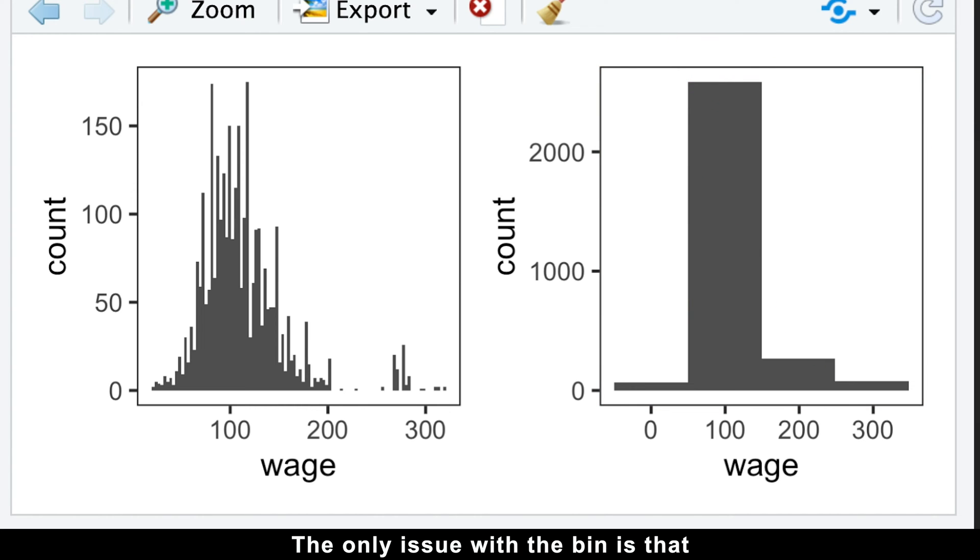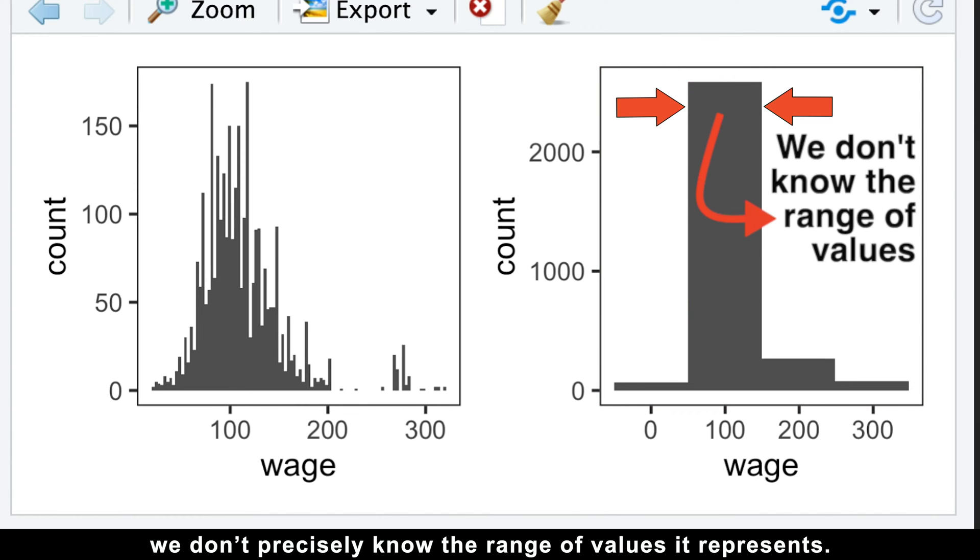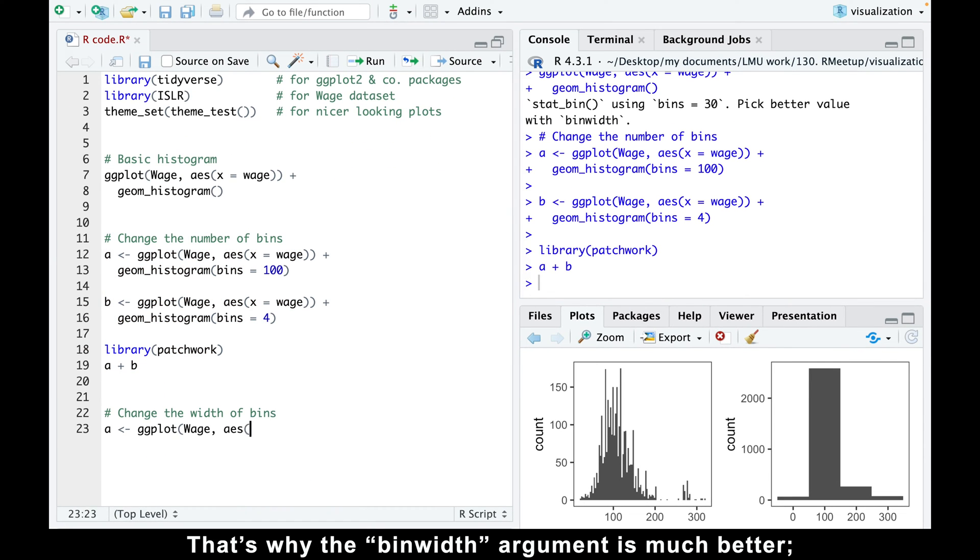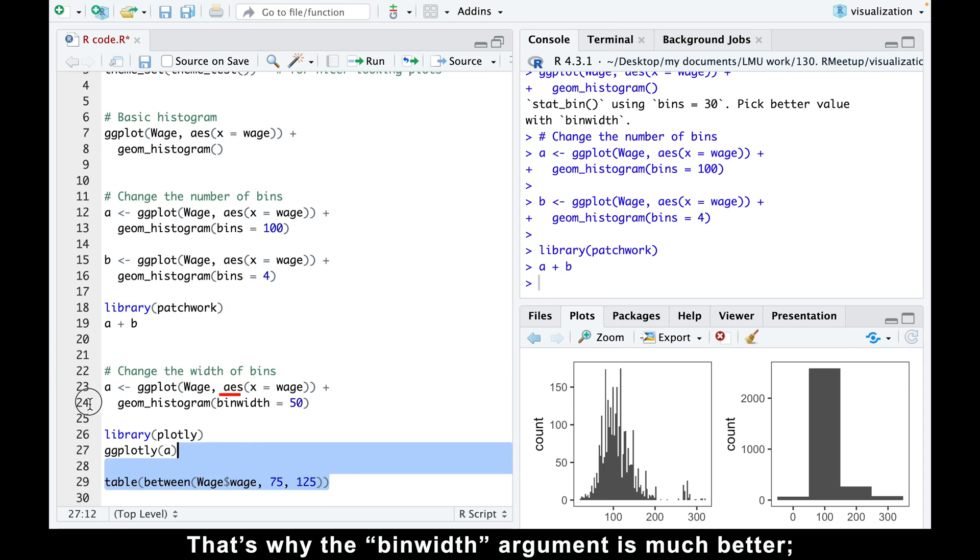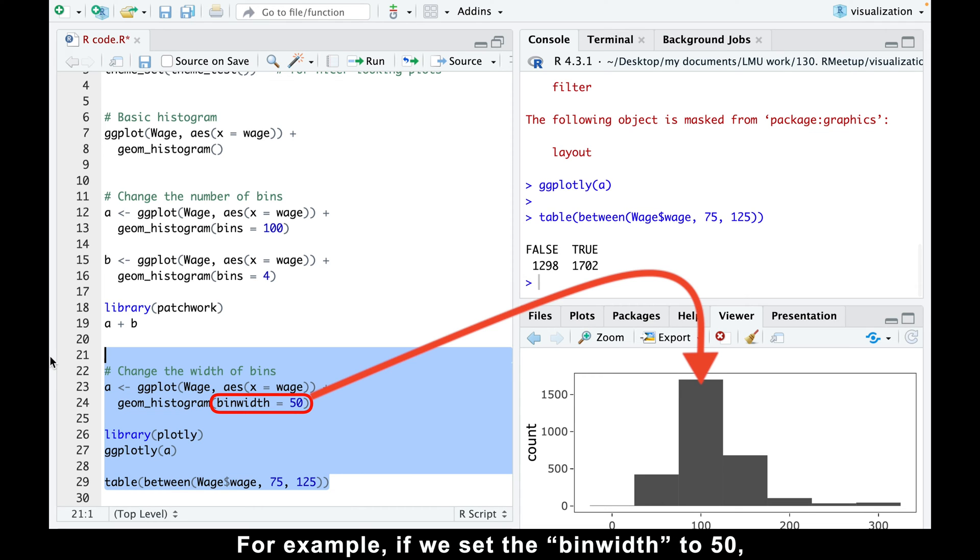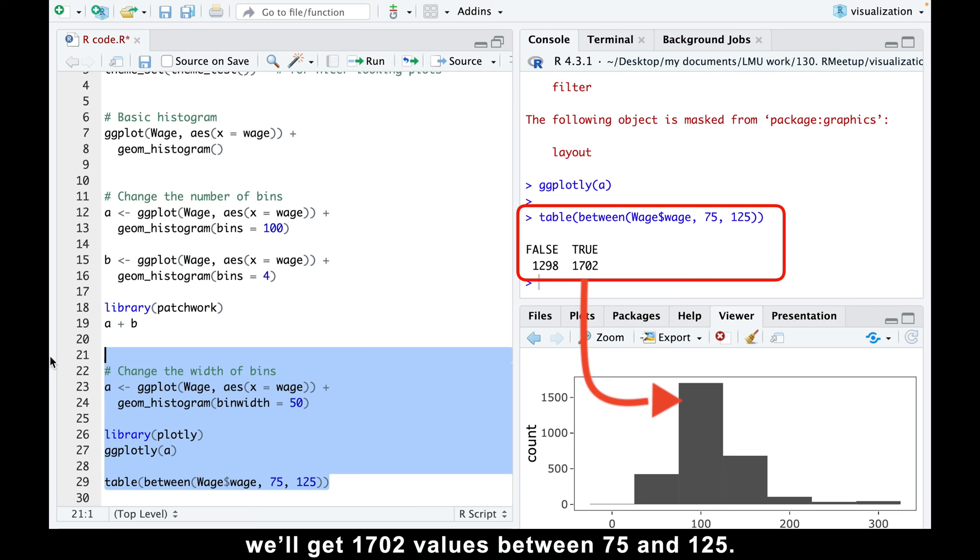The only issue with the bin is that we don't precisely know the range of values it represents. That's why the bin width argument is much better. It allows us to specify the range of values within each bin. For example, if we set the bin width to 50, we'll get 1702 values between 75 and 125.